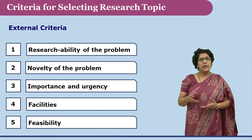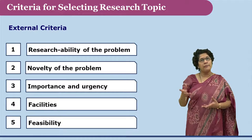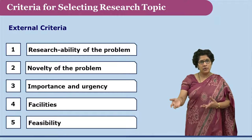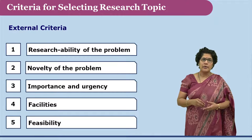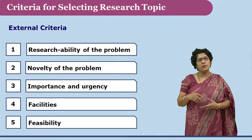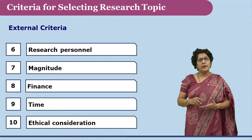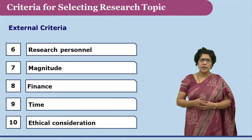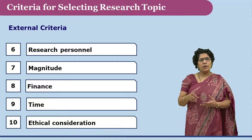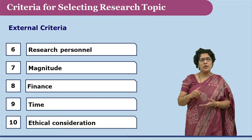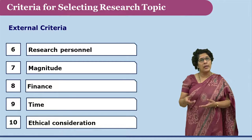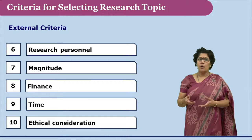The next factor is feasibility — whether it is feasible to get data from the sample group and even to reach that sample group. At times, certain data collection procedures are so vast that the researcher needs the help of other research personnel. In that case, not only the researcher's own competence but also the competence of the people involved in data collection would matter, and the researcher has to check whether such personnel are available.